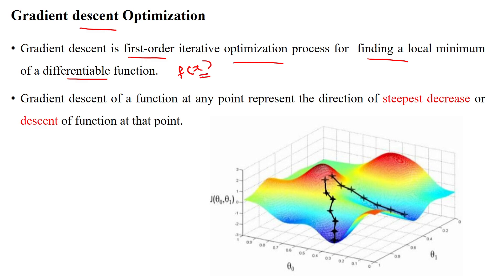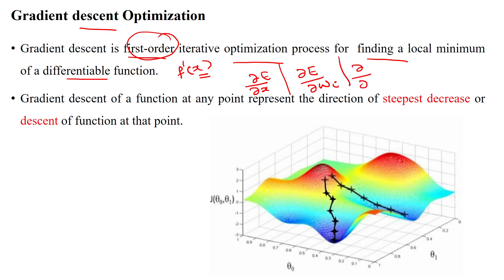We vary x to reduce the error after differentiation using the first-order derivative f'(x), or ∂/∂x with respect to error. Mostly we use the weight parameters ∂E/∂w_i and the bias parameter ∂E/∂b_i. The gradient descent of any function at any point represents the direction of steepest decrease.